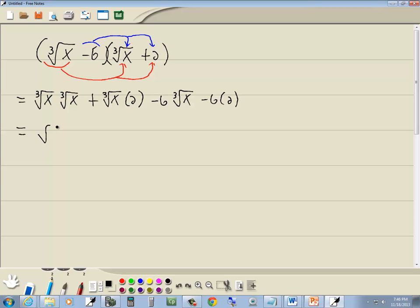Now if the indexes are the same, you can put them underneath the same radical. x times x. Over here, this is just 2 cube root of x minus 6 cube root of x minus 6 times 2 is 12.